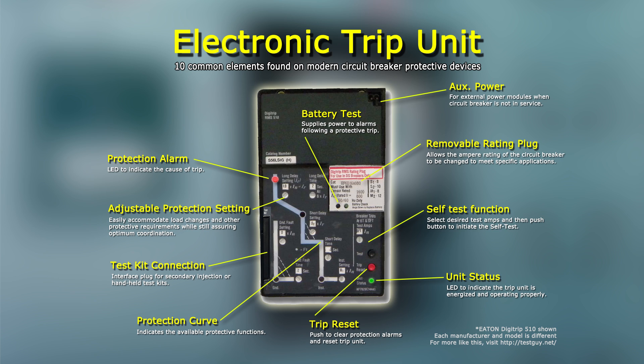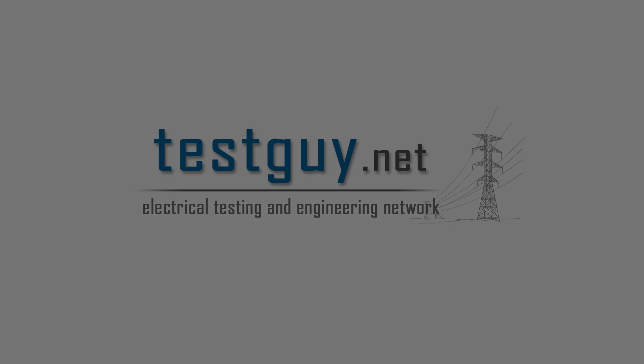Number 10: Auxiliary Power Port. This plug can be used with external power modules to maintain power on the trip unit when the circuit breaker is not in service. Excellent maintenance is essential for reliability and safety of power circuit breakers. Maintenance programs must be tuned to a specific application, well planned, and carried out consistent with both industry experience and manufacturer's recommendations.